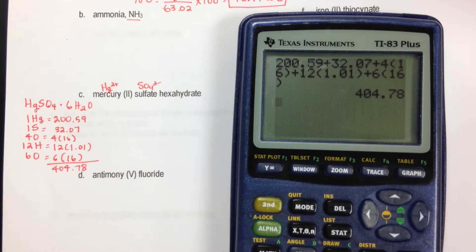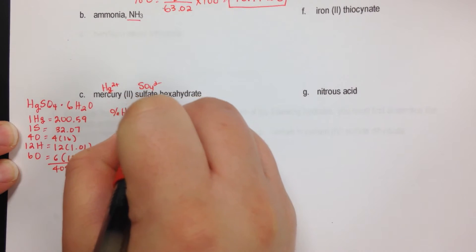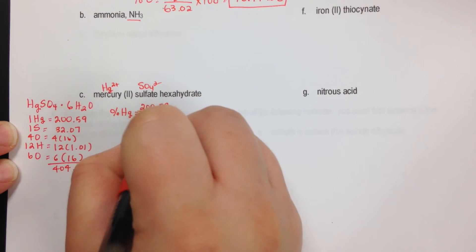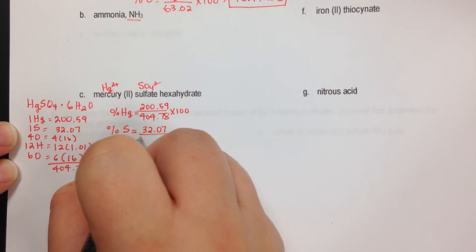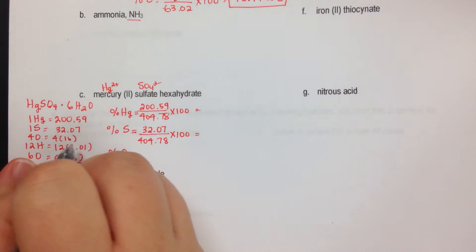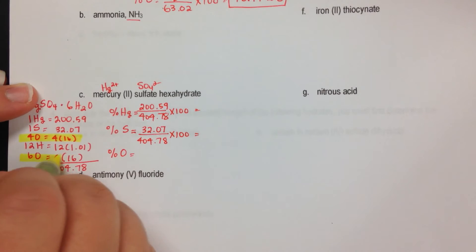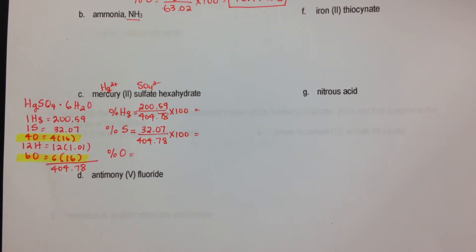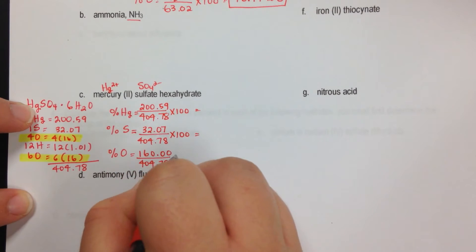When finding each element's percent, we combine the total oxygens. Percent of mercury: take the mass of mercury, 200.59, divide by the total 404.78, multiply by 100. Percent of sulfur: 32.07 divided by 404.78 times 100. For percent of oxygen, I take both oxygen contributions — the 4 times 16 from sulfate and the 6 times 16 from water — giving a combined oxygen mass. 4 times 16 plus 6 times 16 equals 160, divided by the total, times 100.